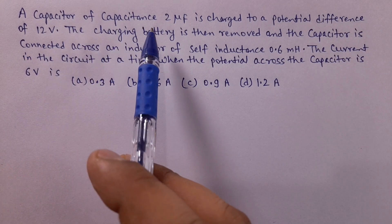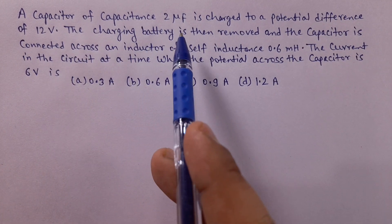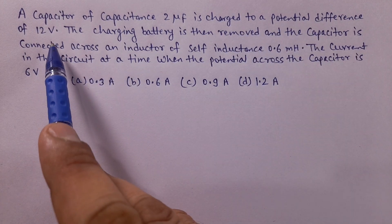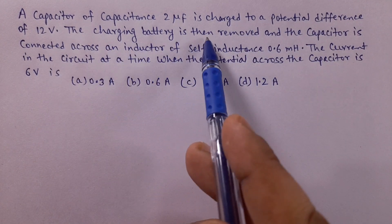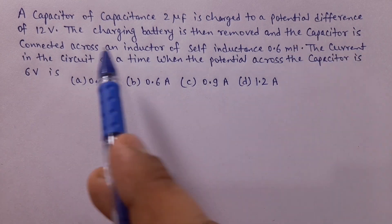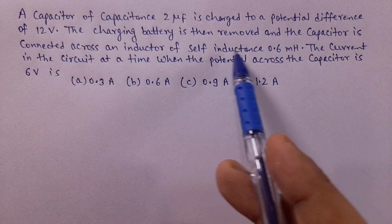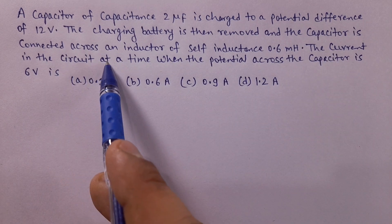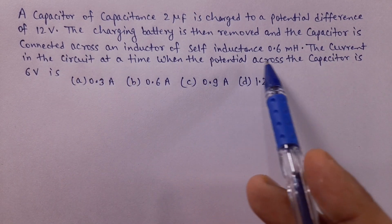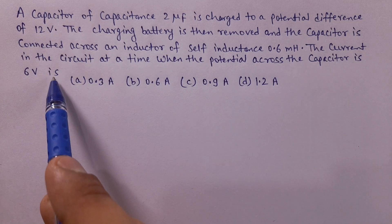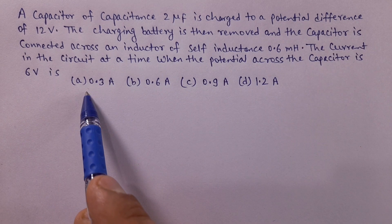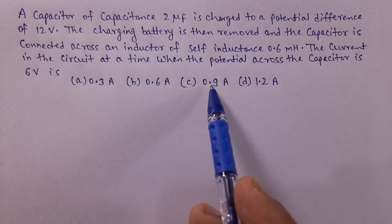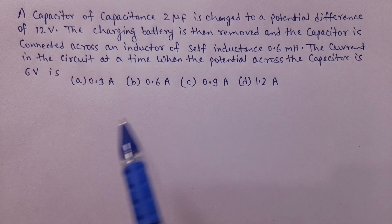A capacitor of capacitance 2μF is charged to a potential difference of 12V. The charging battery is then removed and the capacitor is connected across an inductor of self-inductance 0.6 mH. Find the current in the circuit at a time when the potential across the capacitor is 6V. Option A: 0.3 A, B: 0.6 A, C: 0.9 A, D: 1.2 A.